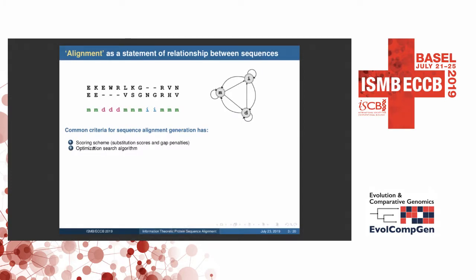So to generate such an alignment, the common criteria, as you know, is usually involving choosing a substitution scoring matrix, and then gap penalty parameters. And it also involves a search algorithm to optimize the scoring scheme and find the best or the optimal alignment.